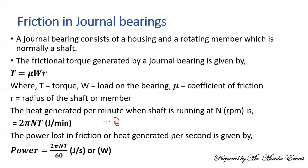There are 60 seconds in one minute, so we divide by 60 to convert from joules per minute to joules per second. Joules per second is a watt, so the result is expressed in watts (W). That covers the journal bearing formulas. Remember the objective is to determine how much energy we are losing because of friction in a journal bearing.